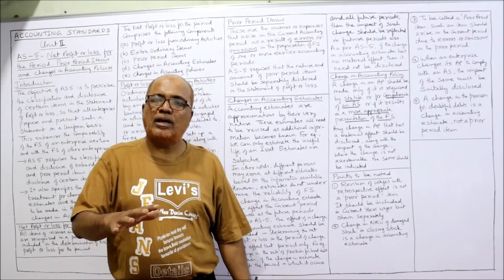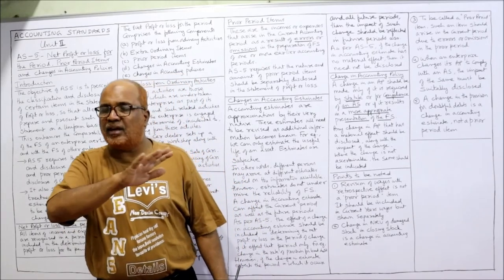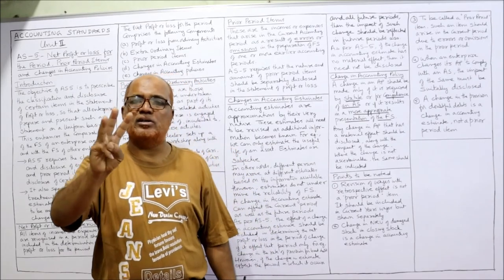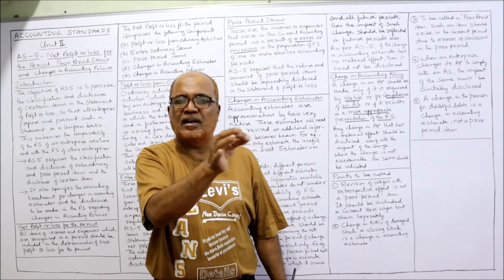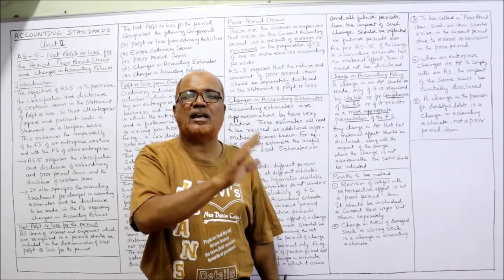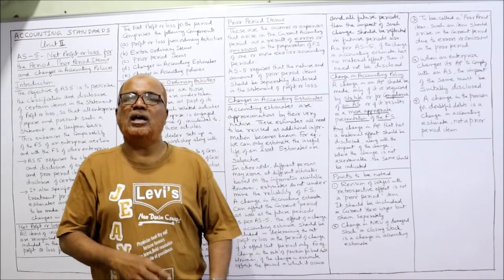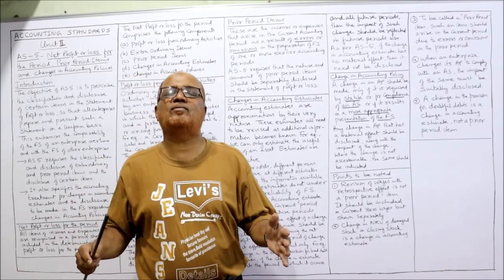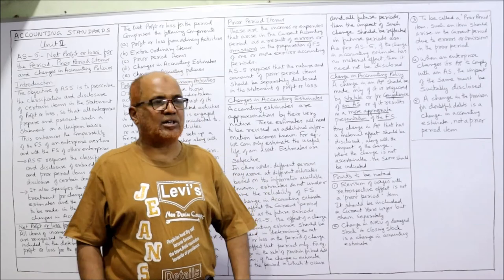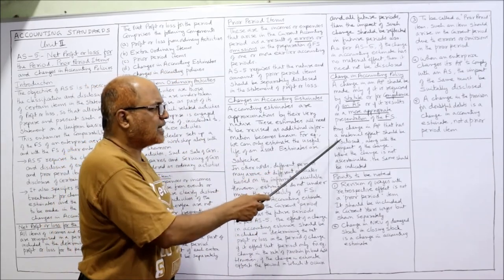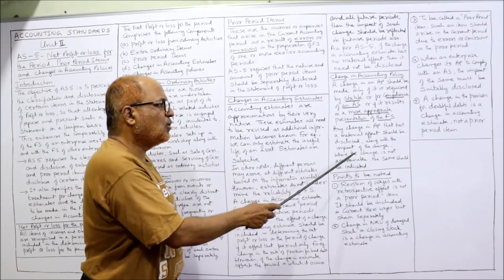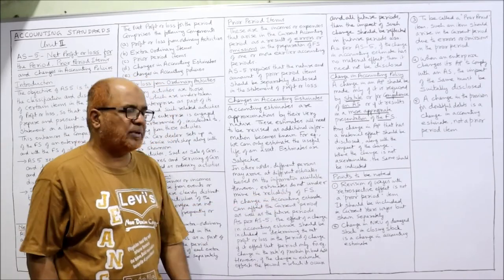To summarize, accounting policy will normally not be changed every year; only under three circumstances: first, if required by law or statute; second, in compliance with an accounting standard; third, if management believes the change will make better financial statements. Any change in accounting policy that has a material effect should be disclosed along with the impact of the change; where the impact is not ascertainable, that fact should be indicated.